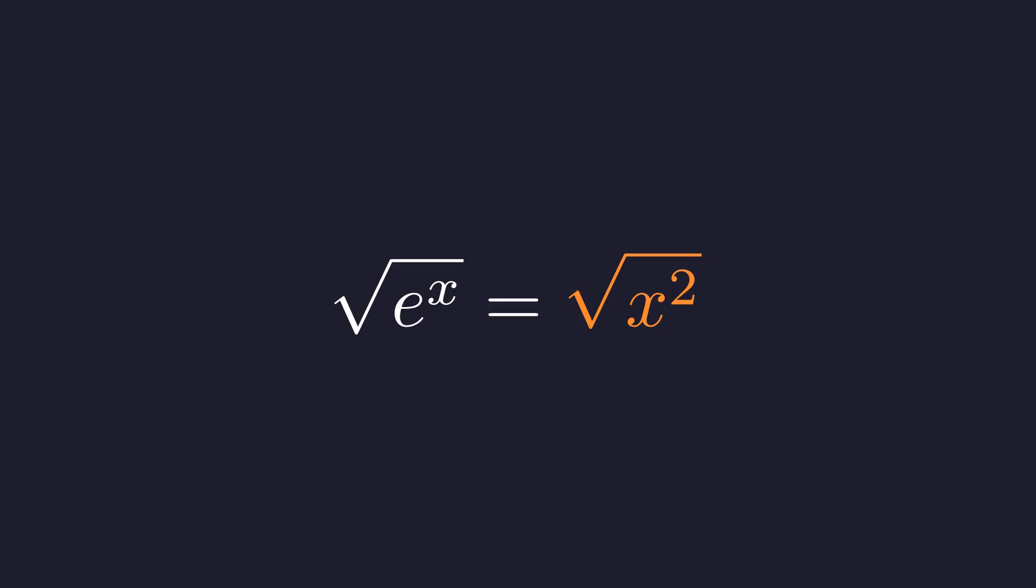Now be careful here. The square root of x squared isn't just x. It's the absolute value of x, because square root always returns the non-negative value. So we get e to the x over 2 equals absolute value of x. But we've already proven that x must be negative. So the absolute value of x is just negative x. This simplifies things nicely.